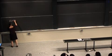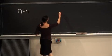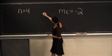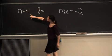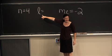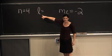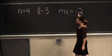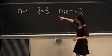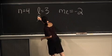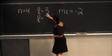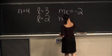We have n equals 4 and m sub l being equal to negative 2. If we have n equals 4, the highest value of l that we can have is 3. We can have n equals 4, l equals 3, and then we can have m sub l equal to negative 2 if l equals 3. The second value of l we can have is 2, so we can have this orbital here.